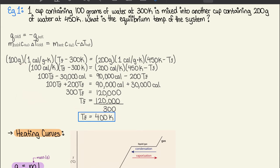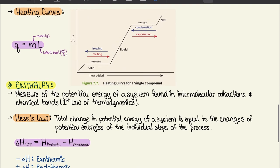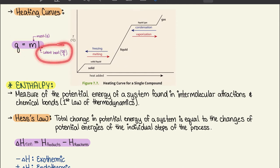For heating curves, the equation is q = mL, where m is mass in grams and L is latent heat in cal/g. Pause the video to study the heating curve graph and see how it correlates with the equation.